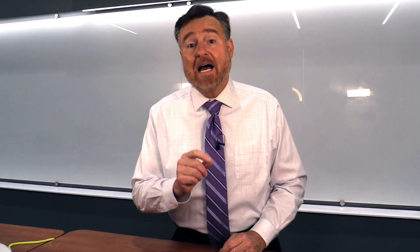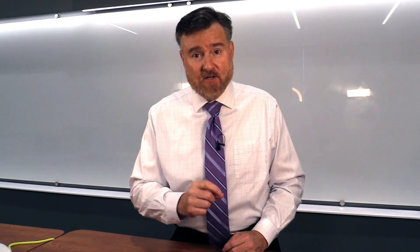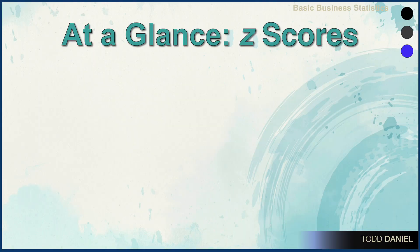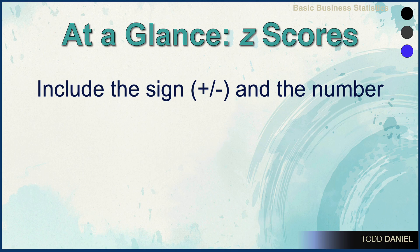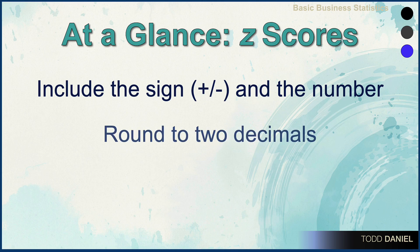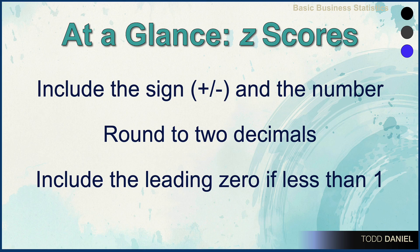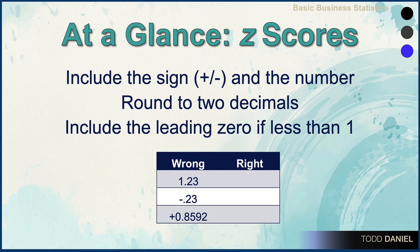Sometimes I like to show how to do something wrong as a way of illustrating how to do it right. Let's do that with z-scores. There are three qualities we should see: it has a sign (positive or negative), it has a number rounded to two decimal places, and if that number is less than one, we still include the leading zero. Let's look at three examples where z-scores have been done wrong. In the first example, they didn't include the positive sign. In the second, they didn't include the leading zero. In the third, they didn't round the z-score to two decimal places.